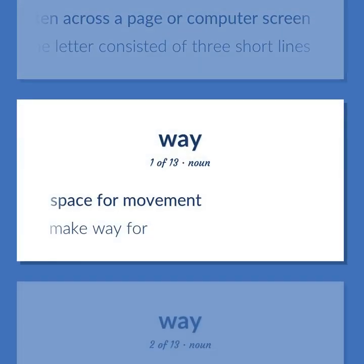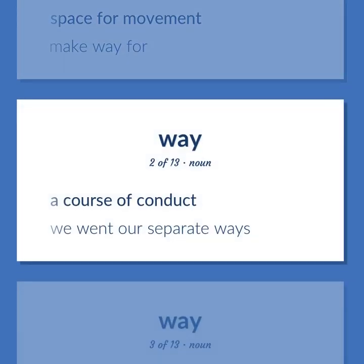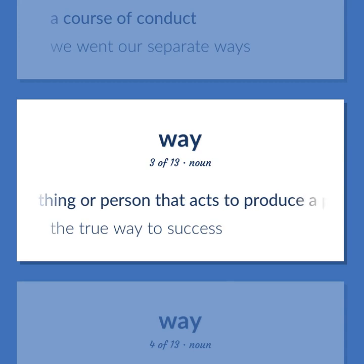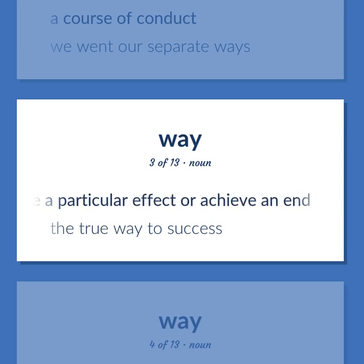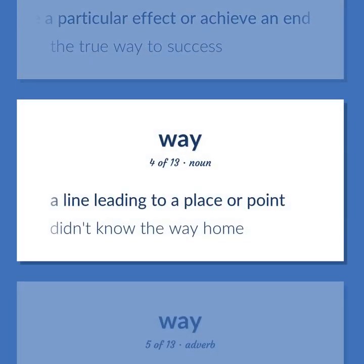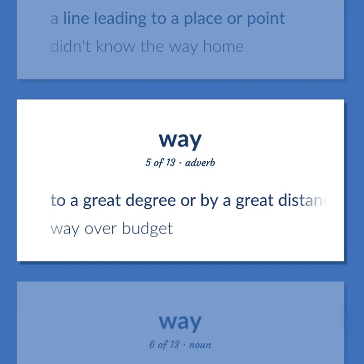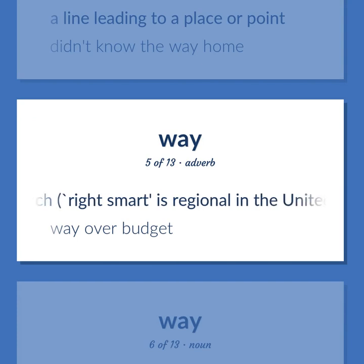Space for movement. Make way for. A course of conduct. We went our separate ways. Thing or person that acts to produce a particular effect or achieve an end. The true way to success. A line leading to a place or point. Didn't know the way home. To a great degree or by a great distance. Very much, right smart, is regional in the United States.